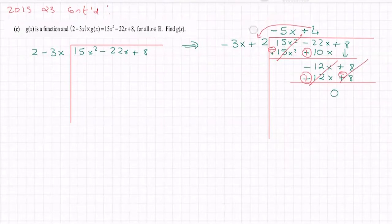So your answer is that that g(x) would have been minus 5x plus 4. It's the number on the top. And of course, you can check this.